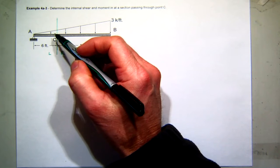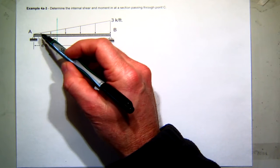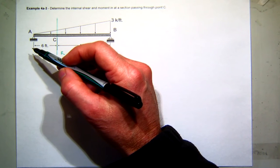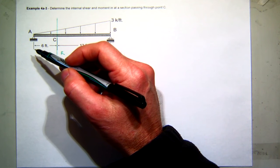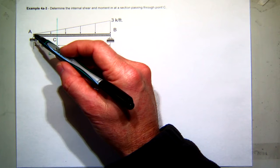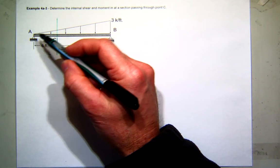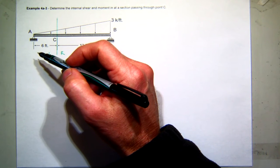We'll look at the left side first. I got a reaction at A, which is a pin. So how many unknowns at a pin? Two. And then the loading is a triangle. Bank that in your memory.